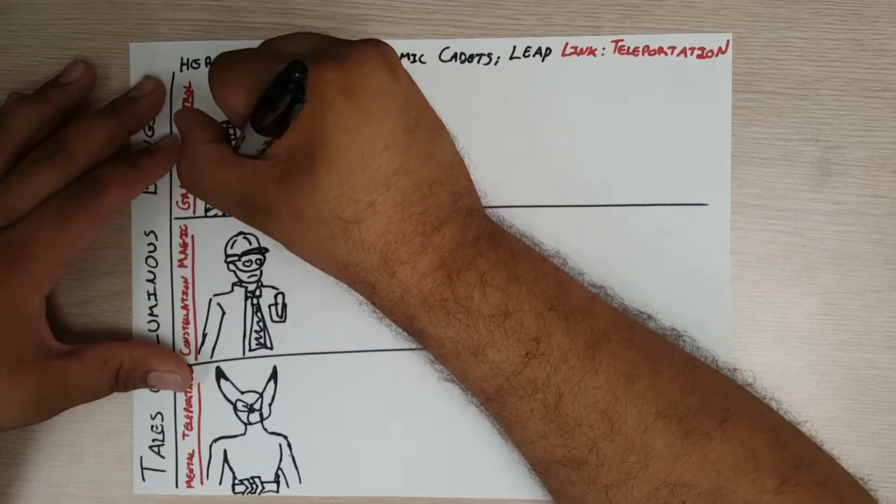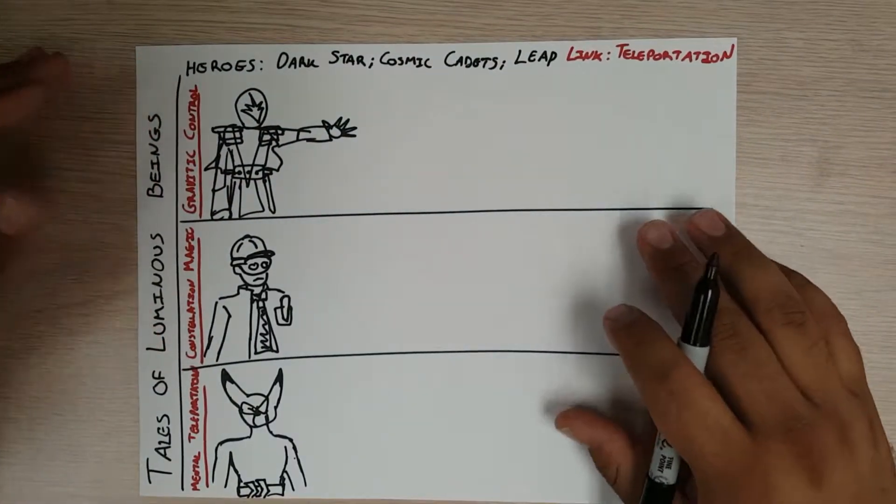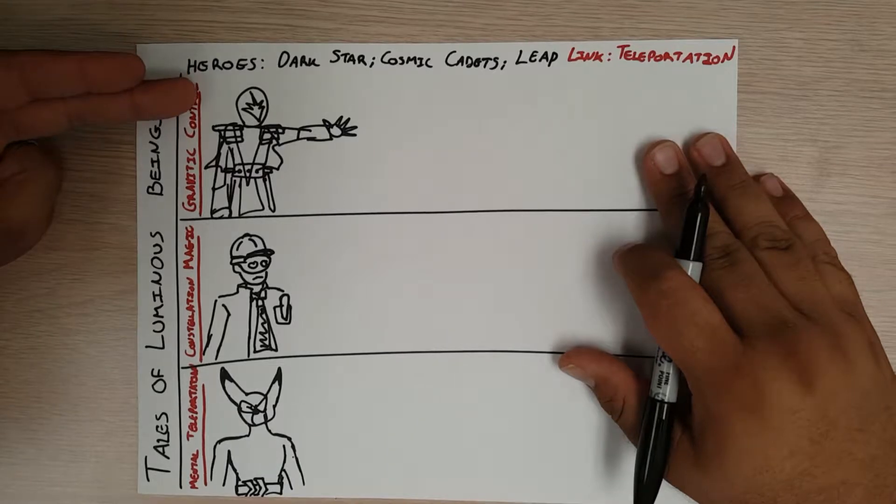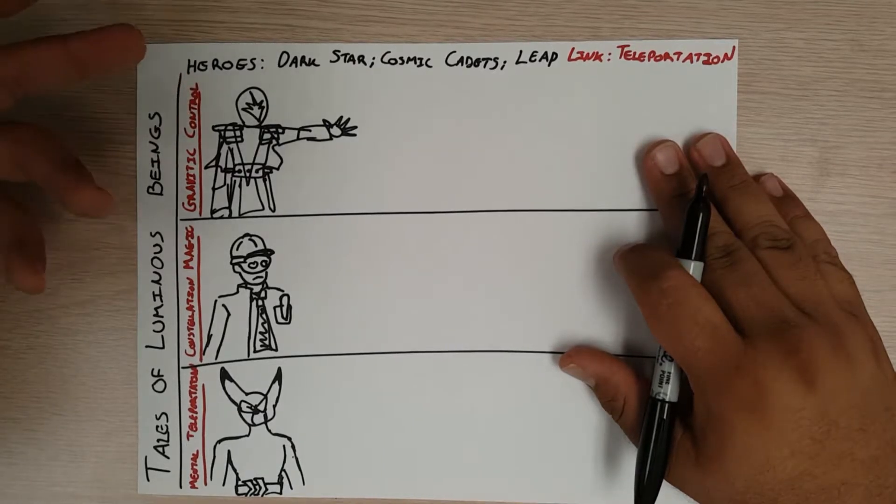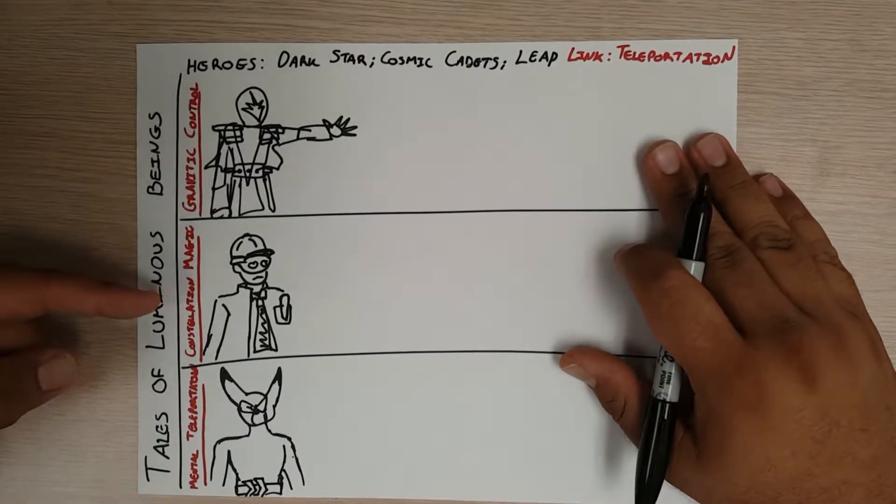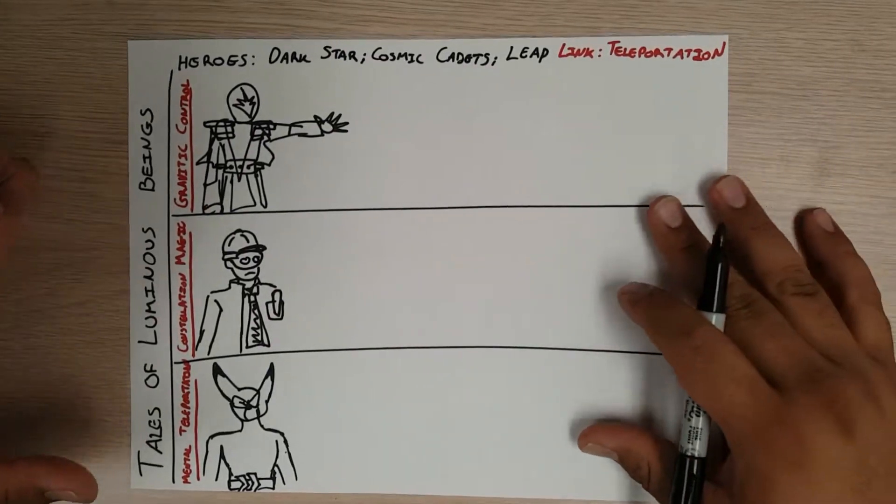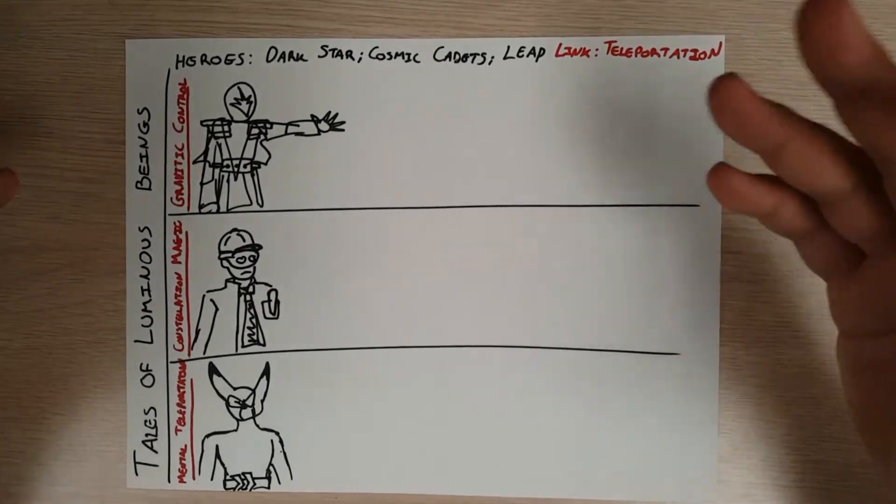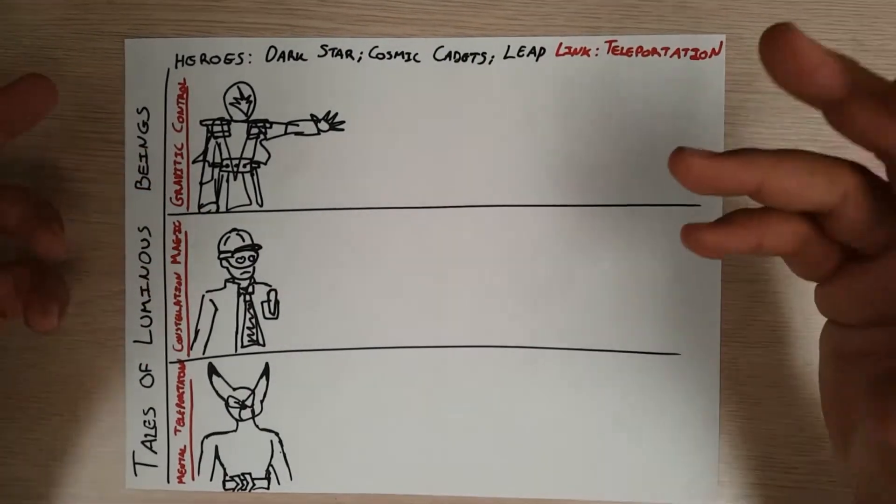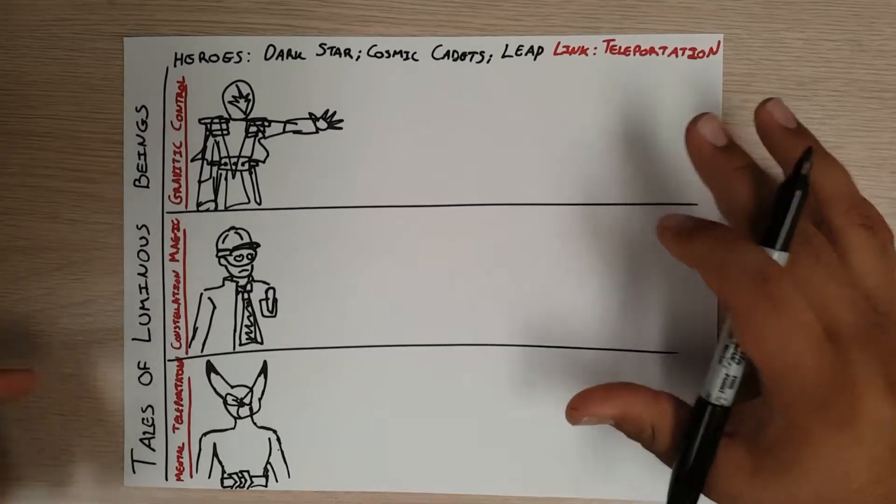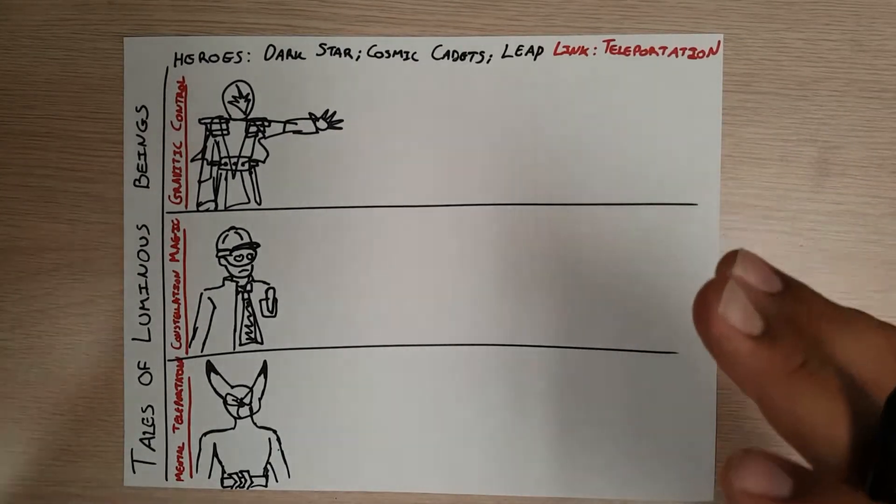Dark Star has control over gravity which she can use to fly and do other things. The Cosmic Cadets have constellation magic - crazy magical powers derived from various constellations. Leap has the ability to teleport, kind of like Kurt Wagner or Nightcrawler from X-Men.